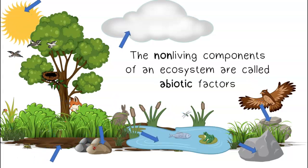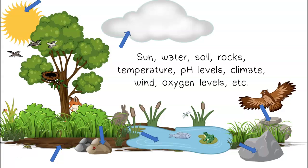The non-living components of an ecosystem are called abiotic factors. Examples of abiotic factors include sun, water, soil, rocks, temperature, pH levels, climate, wind, oxygen levels, and other physical components of the ecosystem.